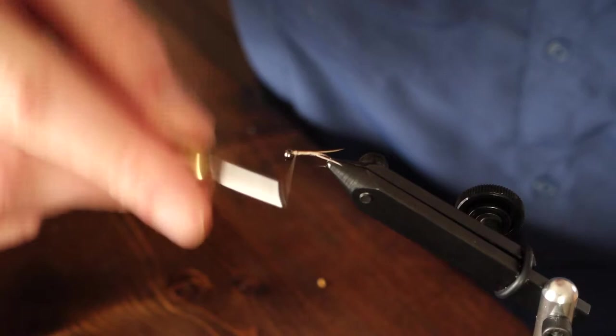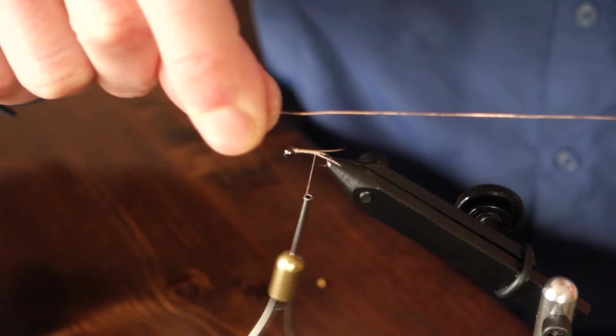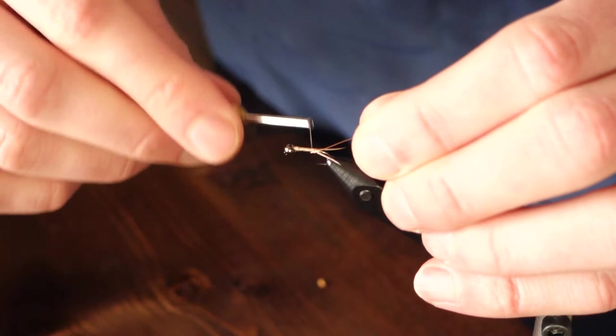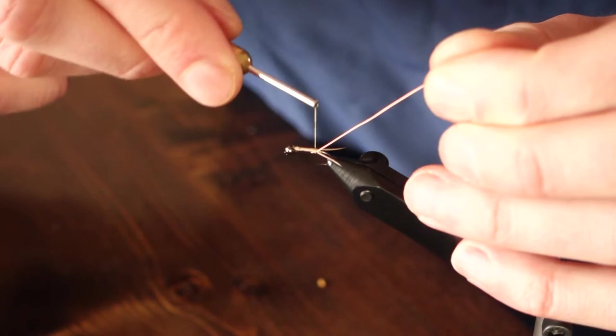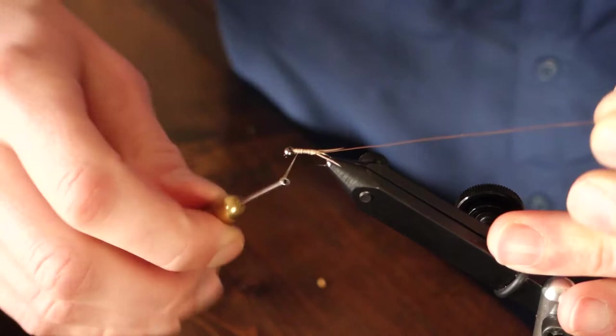Once we get back to the tail we're going to take our brassy UTC ultrawire. This is small. You could use a little bit thicker one. I like the thinner one as an all around wire and that's why I had to build up the body a little bit more because it doesn't add a whole lot of bulk. We'll tie it in right near the tail and make our thread wraps back up. This is your chance to try to even out the taper of that body as much as you can so the bulk is pretty even going back up.